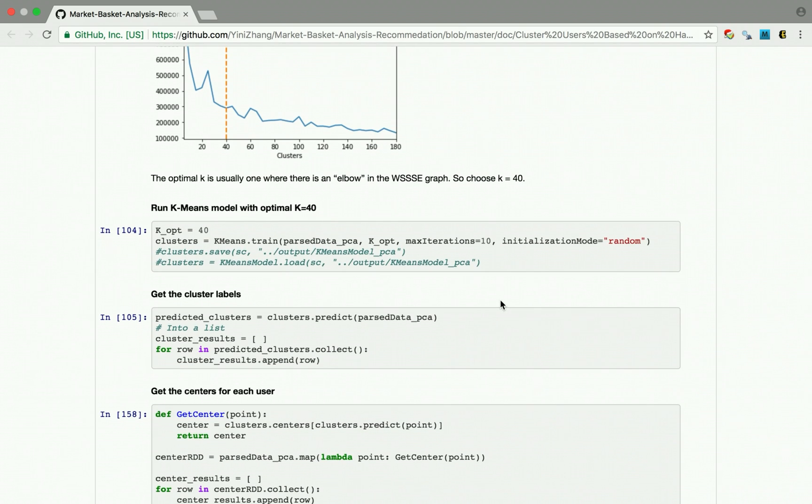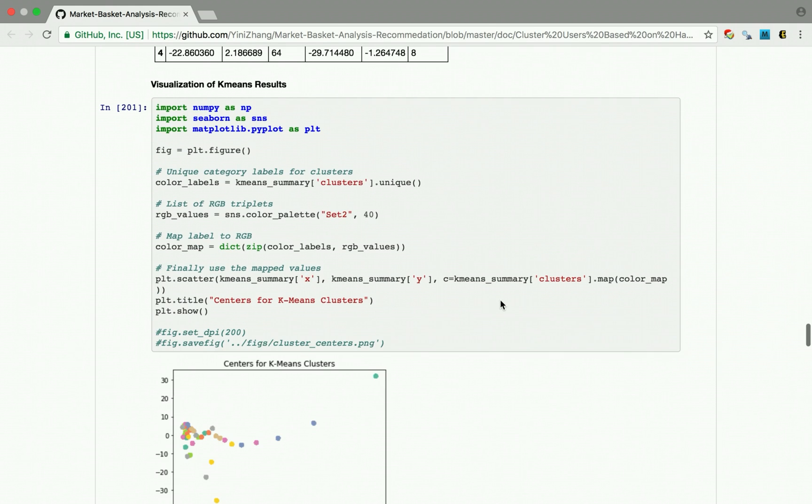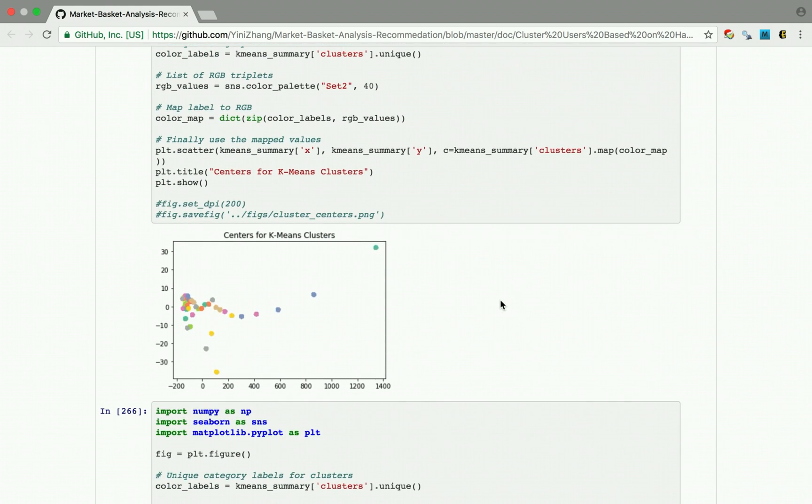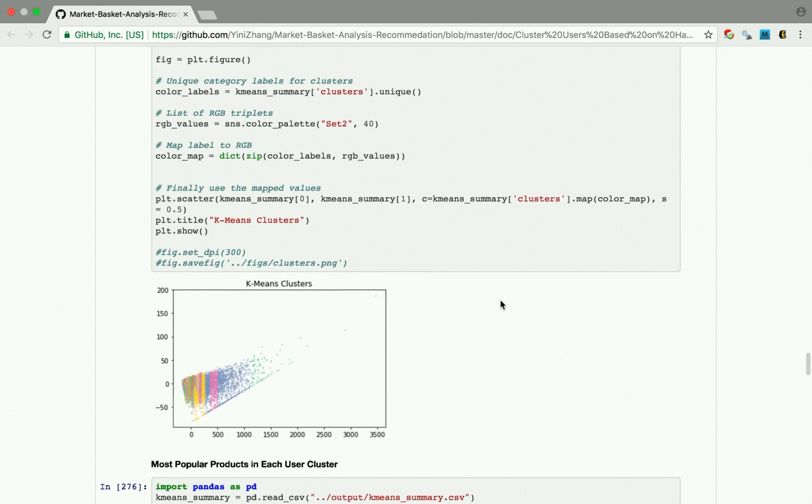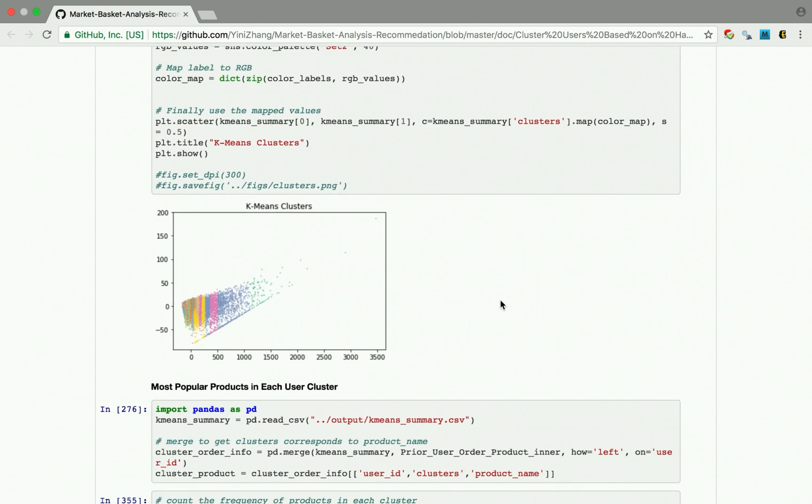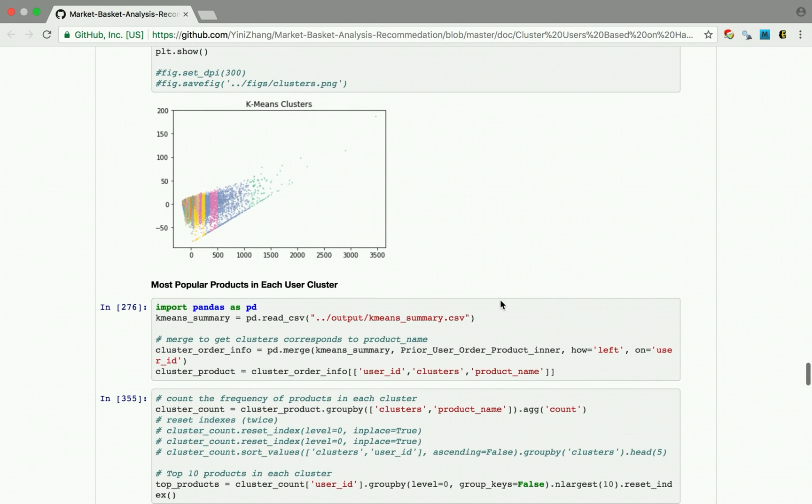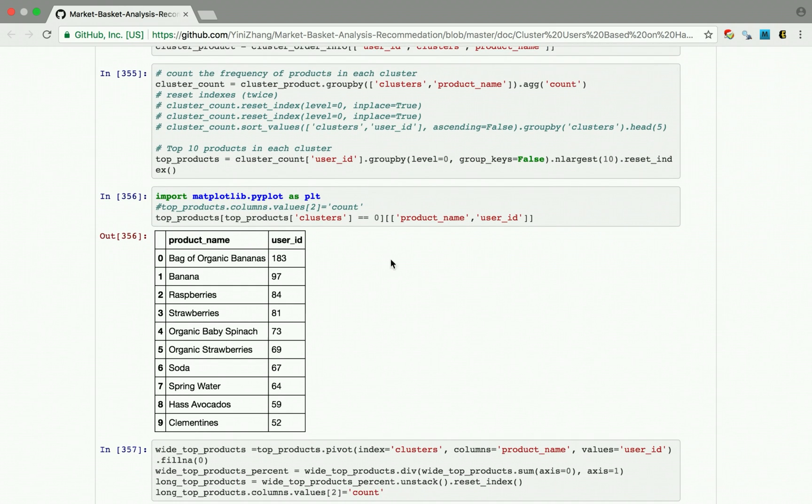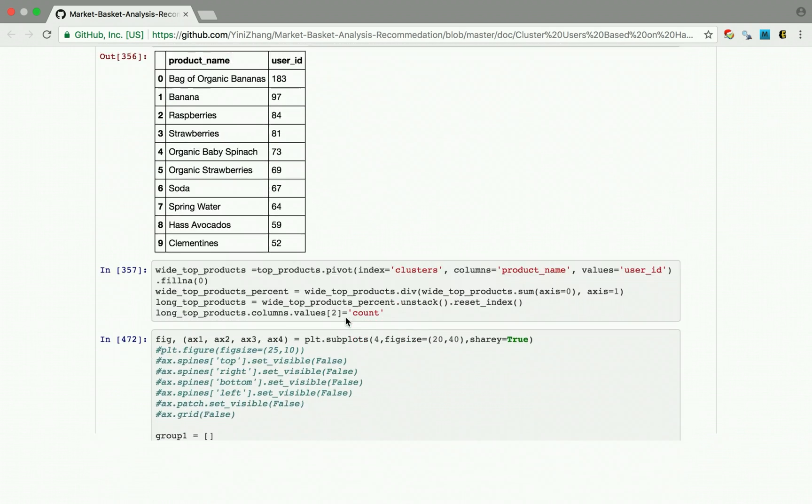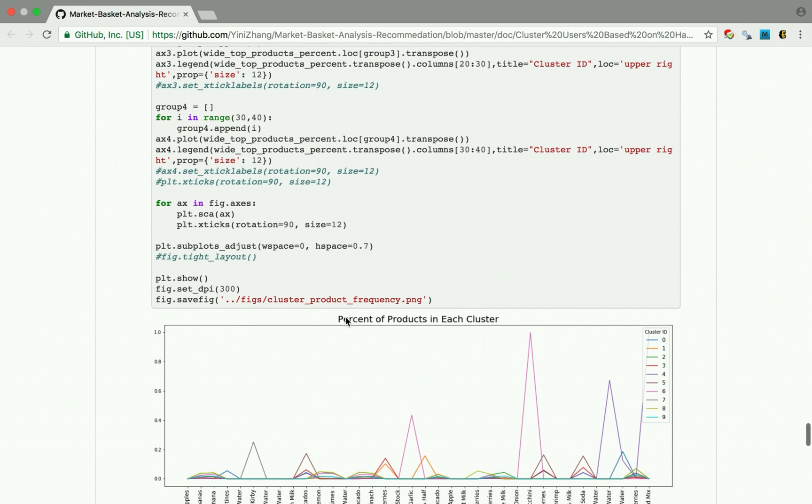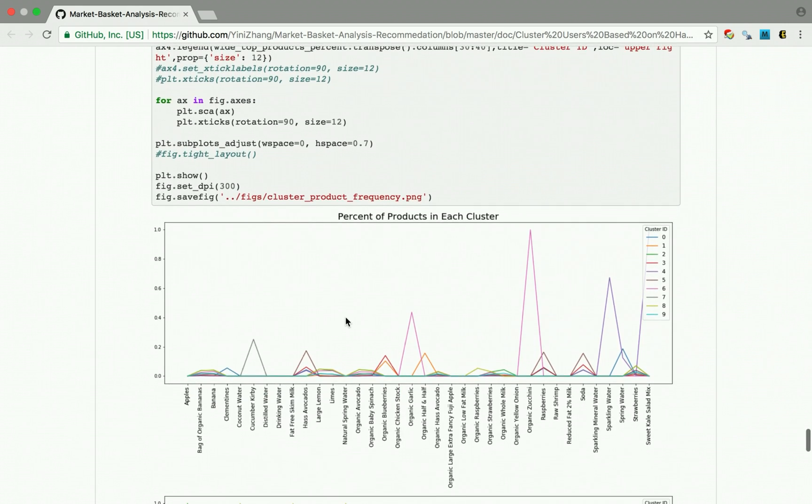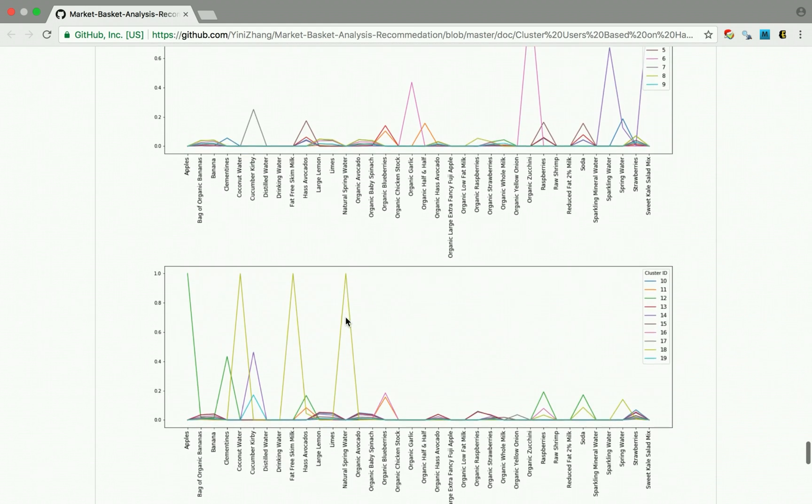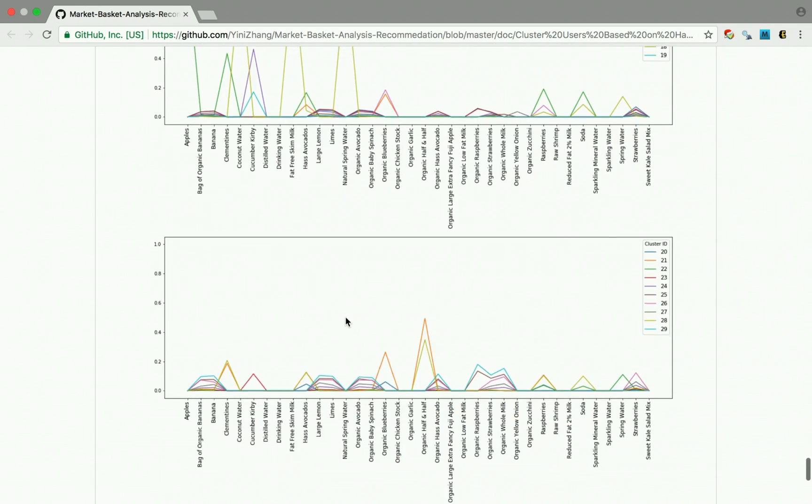And then we run the k-means model with 40 clusters and these are the results we get. Here is a plot for the centers of k-means clusters. This is a visualization of k-means clusters in two dimensions. We can then get the most popular products in each cluster. For example, if we want to get the top 10 products in cluster 0, we will have this. And if a customer is in cluster 0 and haven't bought strawberries before, we will definitely recommend strawberries to the customer. We can then draw the subplots for the products in each cluster. Since we have 40 clusters, we will draw 4 subplots for clearer display.